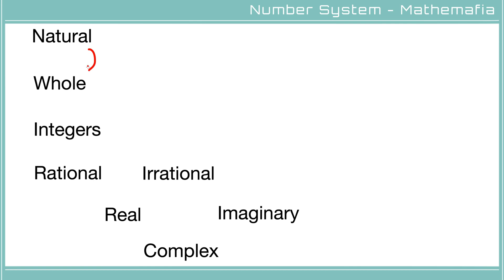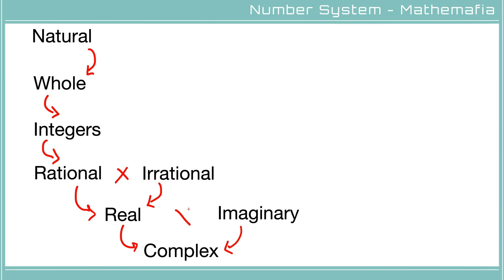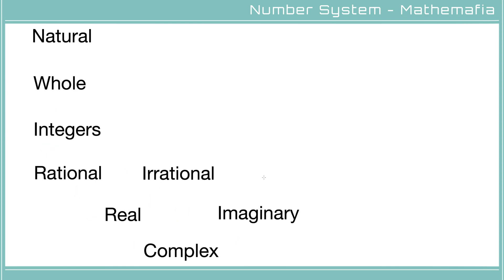Every natural number is a whole number, every whole number is an integer, and every integer is a rational number. Every rational number is a real number, and every irrational number is also a real number, but irrational and rational numbers are mutually exclusive. Every real number is a complex number, and every imaginary number is a complex number as well, but real numbers and imaginary numbers are also mutually exclusive. So every number is actually a complex number.